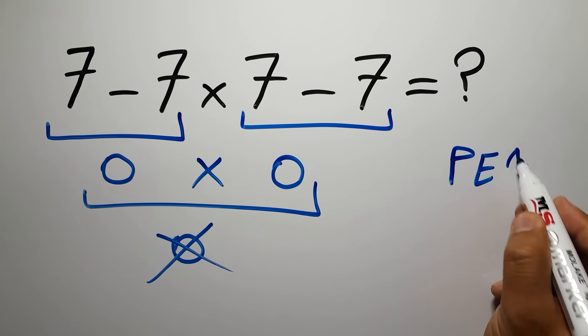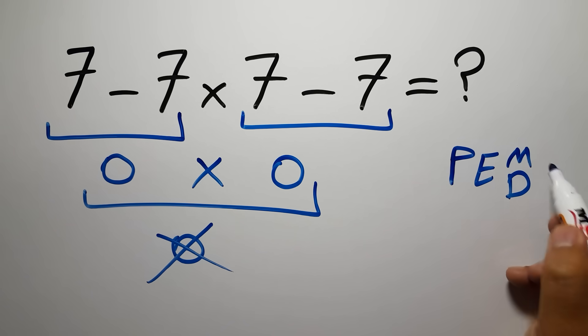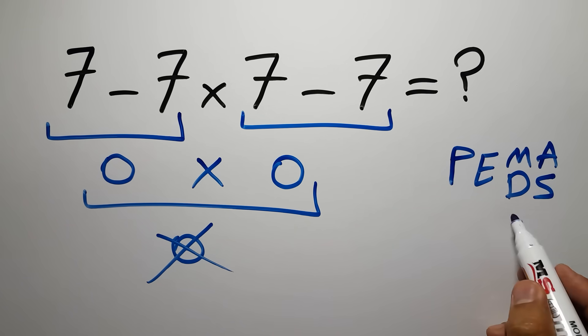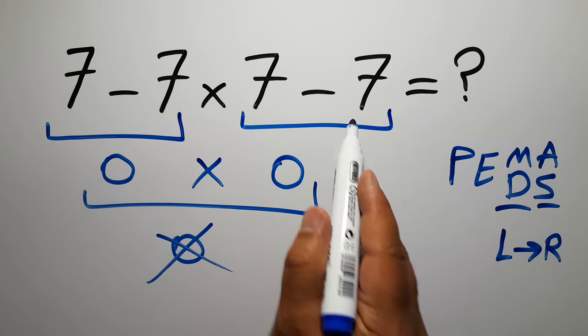Then exponents, then multiplication or division, and finally addition or subtraction. Remember that multiplication and division have equal priority and we have to work from left to right. The same applies to addition and subtraction.